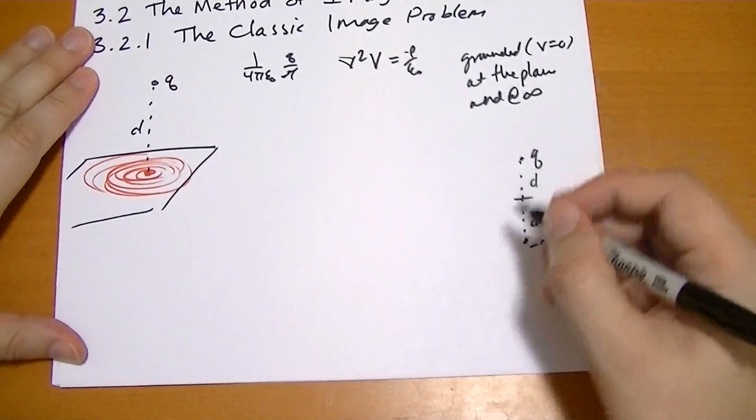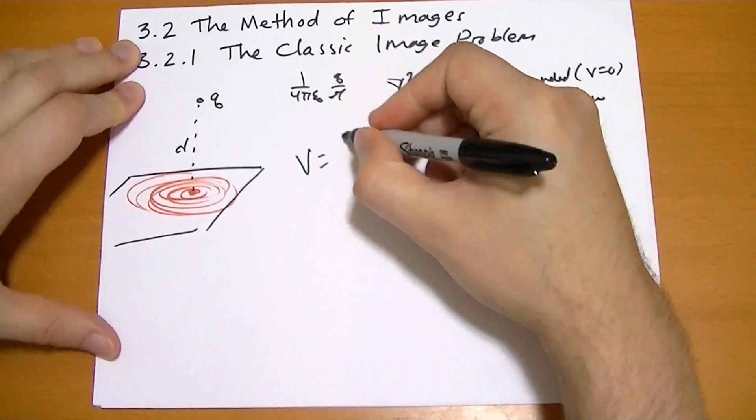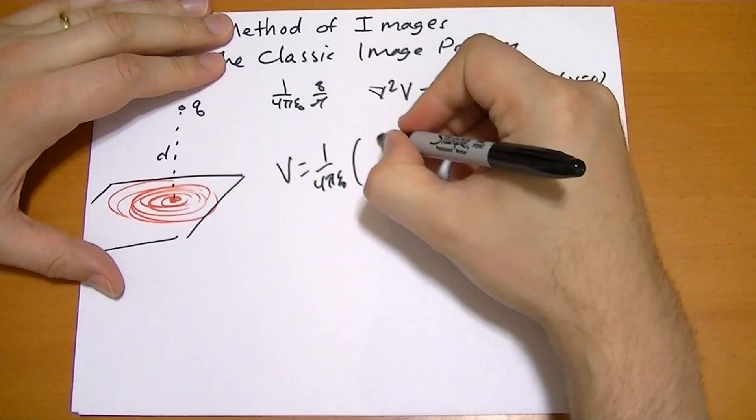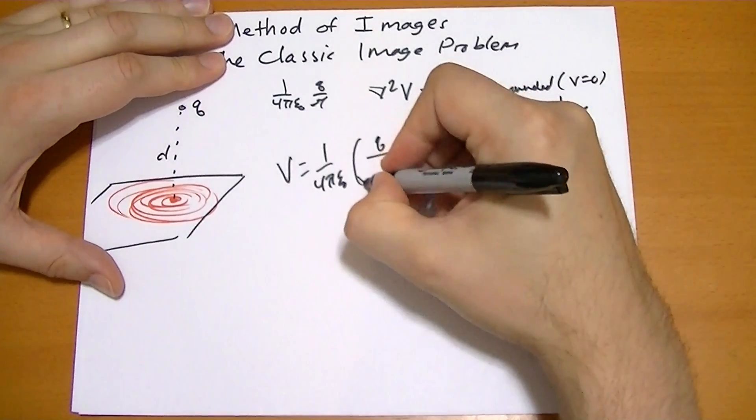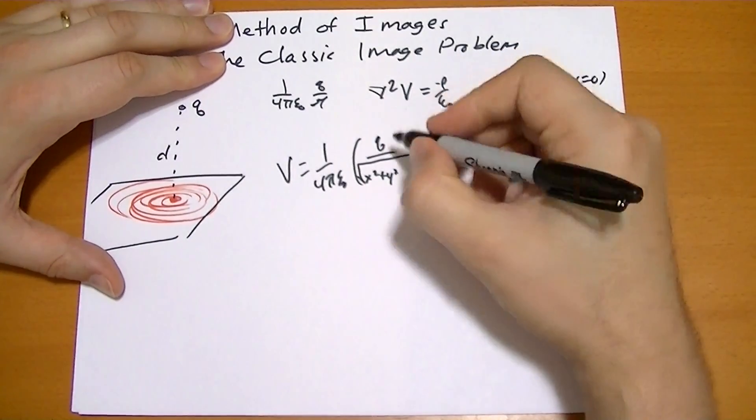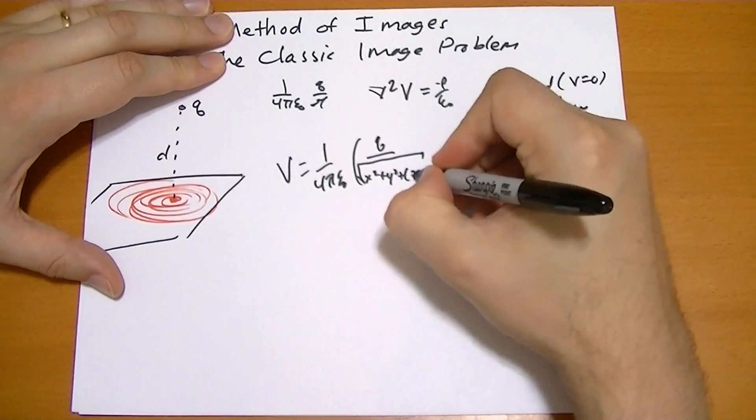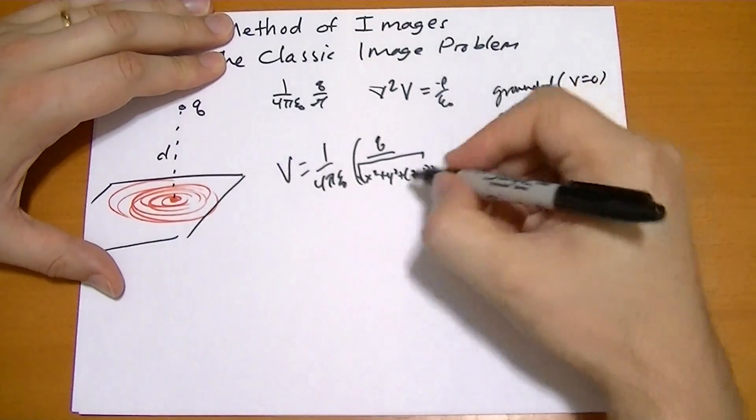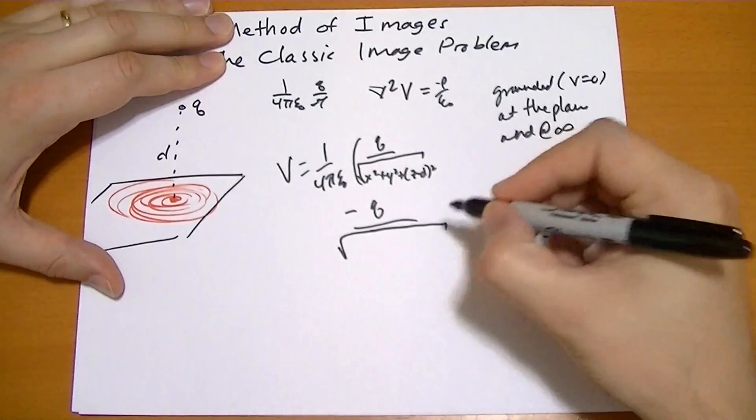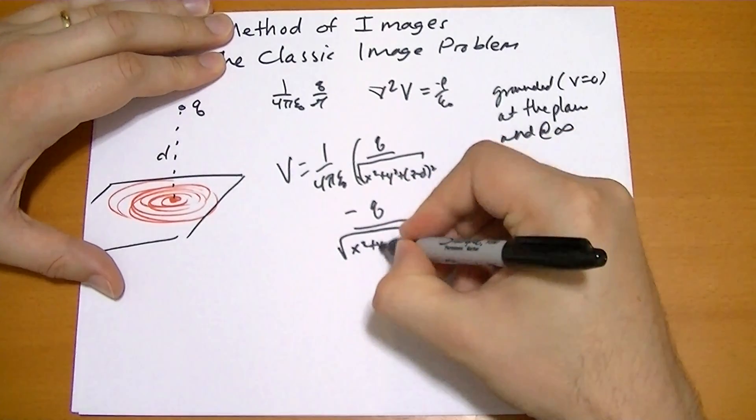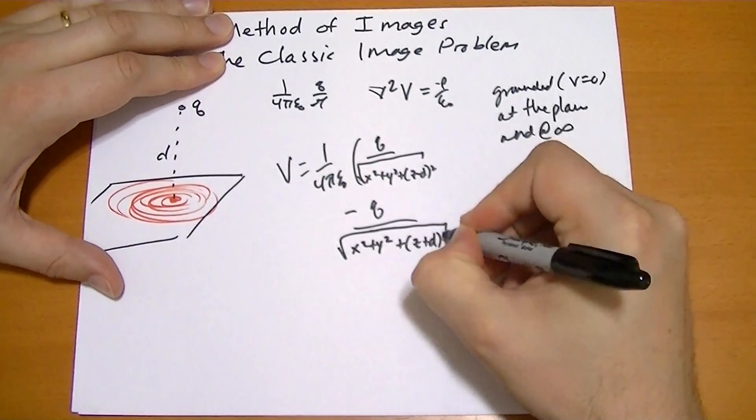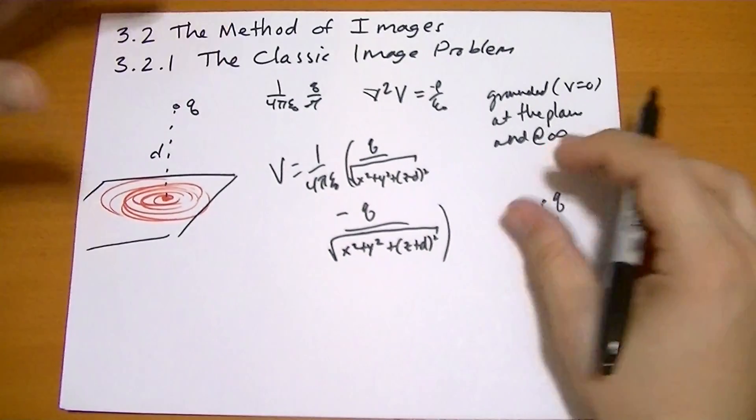which is, V equals one over four pi epsilon naught times the positive charge divided by the square root of x squared plus y squared, and I didn't leave enough room, plus z minus d squared, minus the charge over square root, that should be enough, x squared plus y squared, plus z plus d squared.